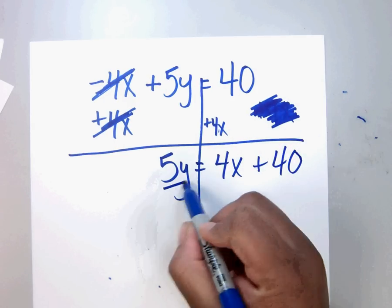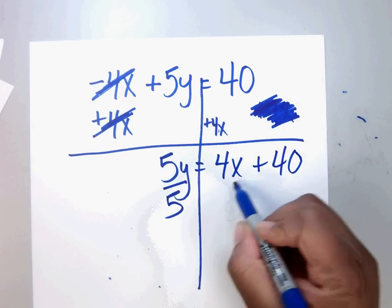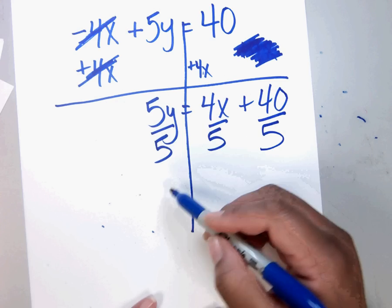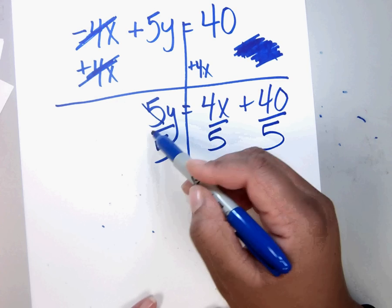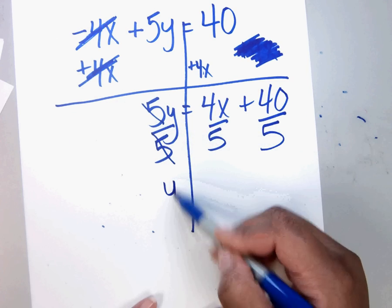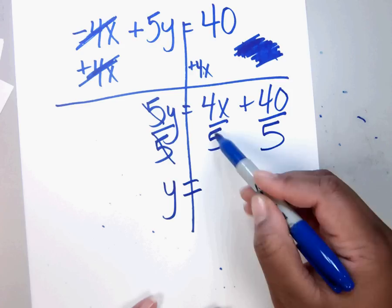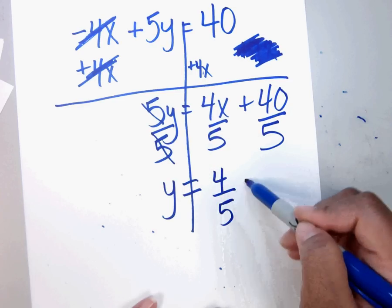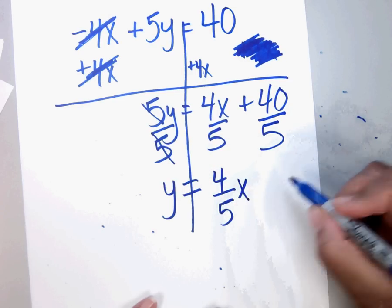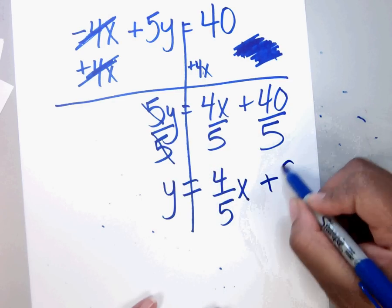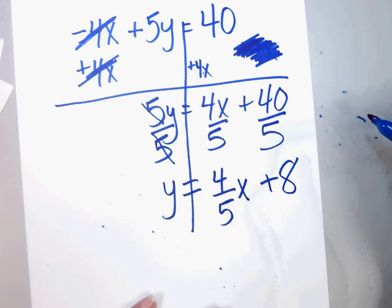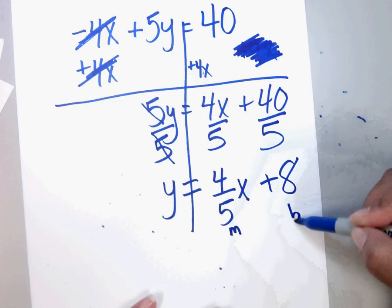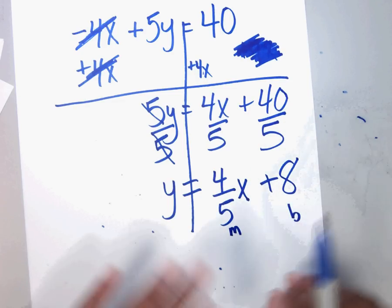Divide by 5 on everything. Cancel, cancel, cancel. Y equals positive 4 over 5x plus 8. There's my m, there's my b.